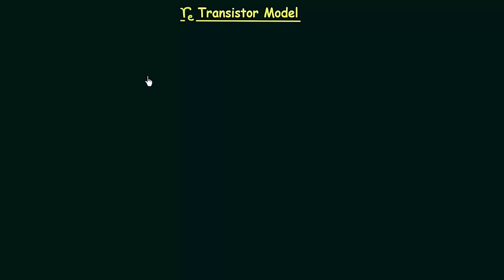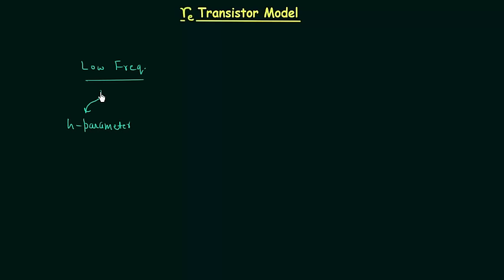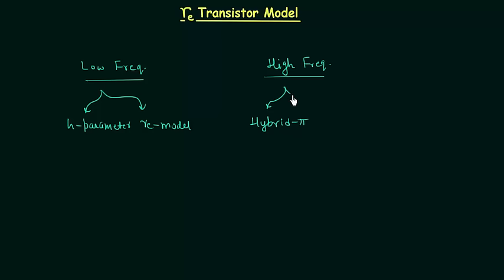In this lecture I will explain how to obtain the RE transistor model. In the last few lectures we completed the H parameter model. Both H parameter and RE transistor models are used for low frequency signals. For high frequency we have the hybrid pi model and the Y parameter model. In this course we only need to learn the H parameter model, RE model, and hybrid pi model.